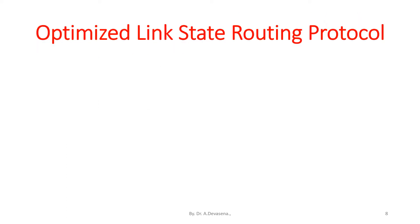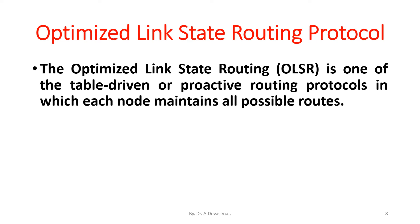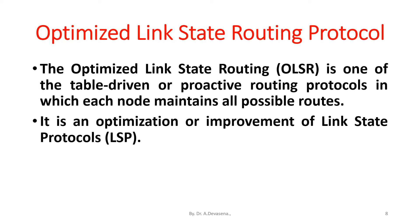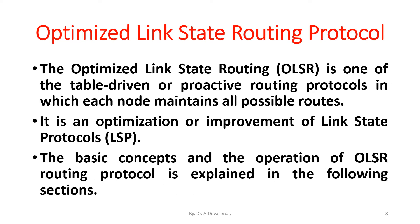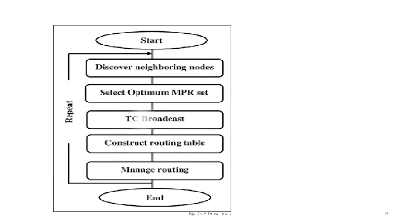Optimized Link State Routing Protocol, OLSR. The optimized link state routing is one of the table-driven or proactive routing protocols in which each node maintains all possible routes. It is an optimization or improvement of link state protocols. The basic concepts and operation of OLSR routing protocol are explained in the following sections. The flowchart representing the OLSR steps is: first, discover neighboring nodes; second, select optimum MPR set; third, topology control broadcast; fourth, construct routing table; and fifth, manage routing. This process repeats until the exact routing has been identified.